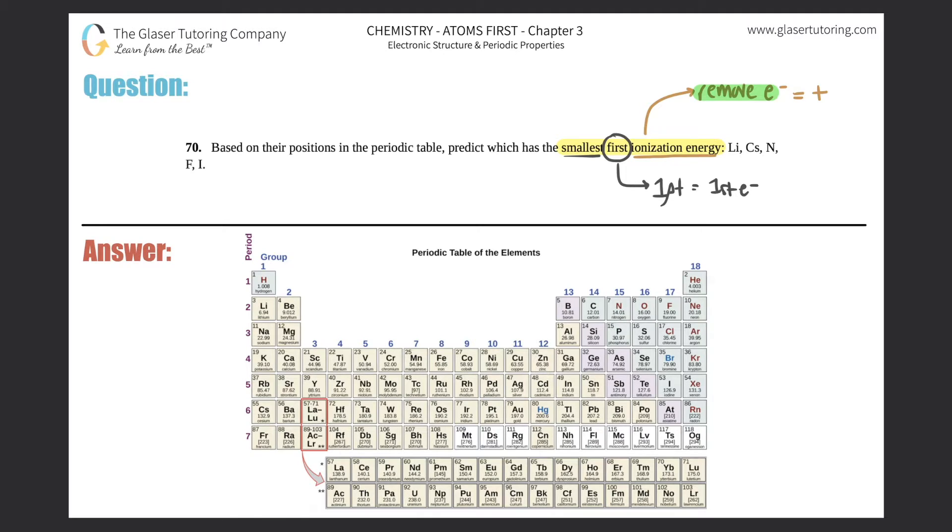For periods going across the periodic table, the trend for ionization energy—I'll just put I.E.—is that as you go from left to right, ionization energy increases. That means elements on the right side have a much higher amount of energy needed to remove an electron compared to elements on the left.